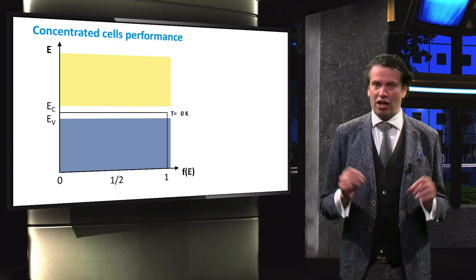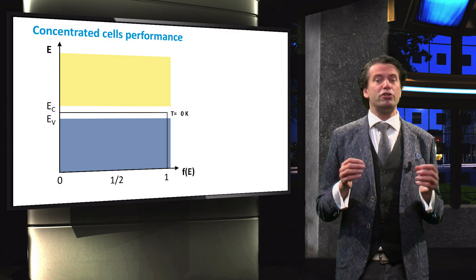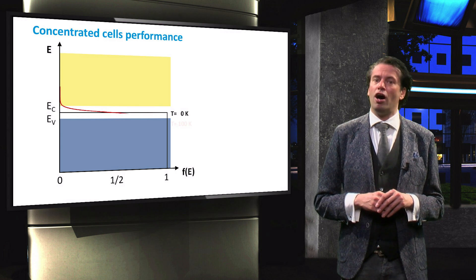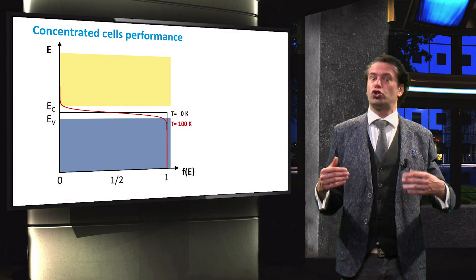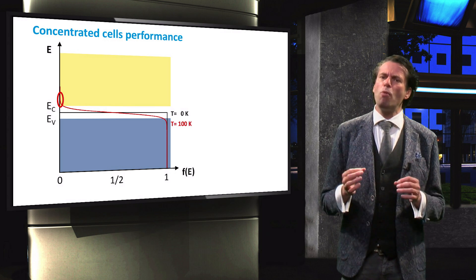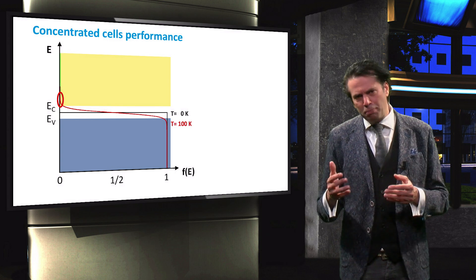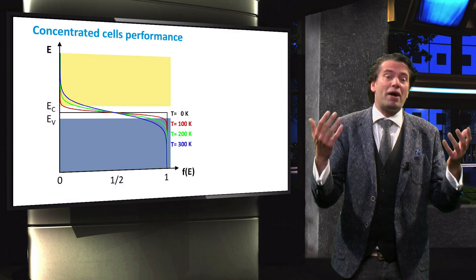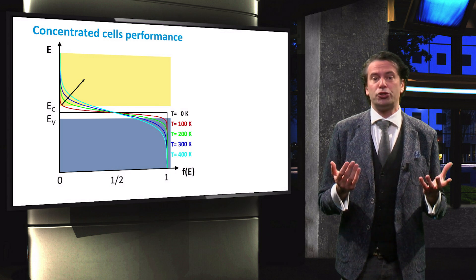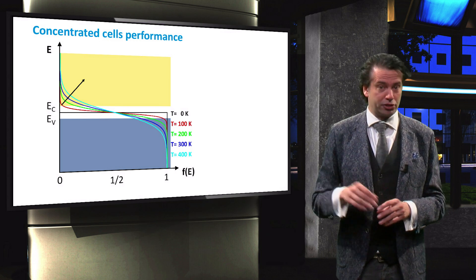At a temperature of 0 Kelvin, the Fermi-Dirac distribution resembles a block function where the probability of electrons occupying states in the conduction band is 0. At a temperature of 100 Kelvin, the probability for some energy levels in the conduction band becomes greater than 0, meaning that some mobile electrons will be present in the semiconductor. As the temperature increases, the probability for electrons occupying energy states in the conduction band becomes higher. Physically, this means that at a higher temperature, due to greater thermal excitation, a larger number of mobile charge carriers are available.